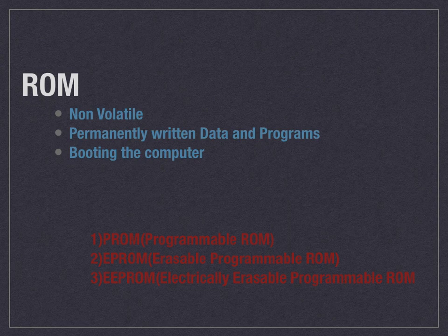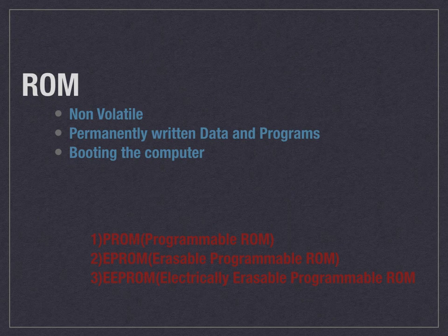The second type of ROM is EPROM — erasable programmable ROM. This memory retains its contents until it is exposed to ultraviolet light. If you expose it to ultraviolet light, it clears its contents, which makes it possible to reprogram the memory.